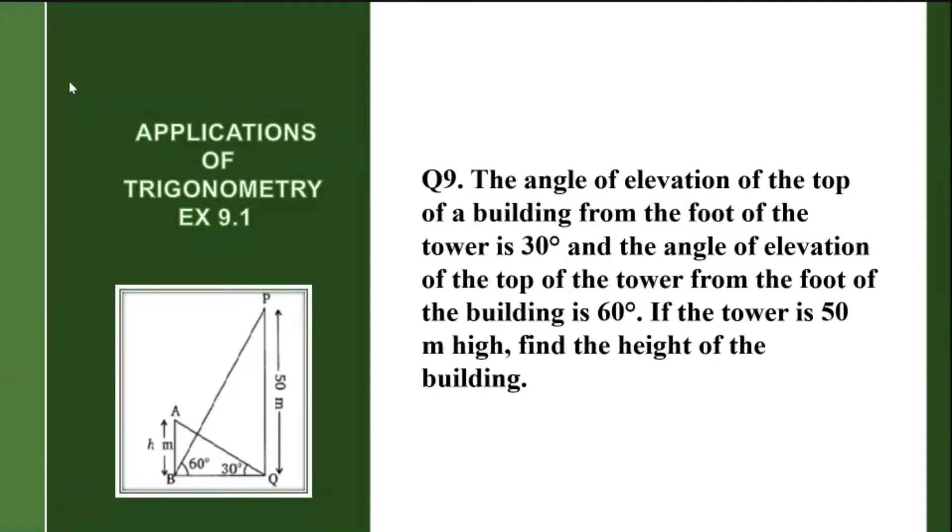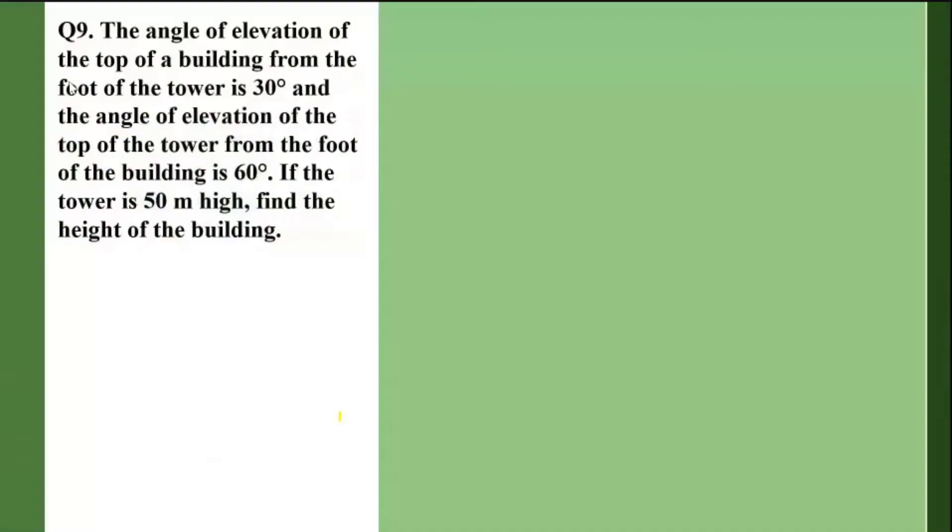Our question seems a little confusing, but actually, it is not that difficult. Just follow what is given to us and then draw the figure. So what do we have here? The angle of elevation of the top of the building from the foot of the tower. So I'll have to take one thing as the tower and one thing as the building.